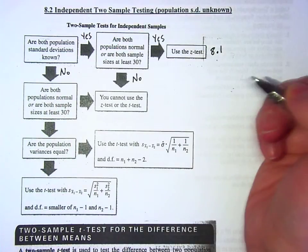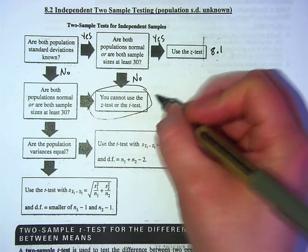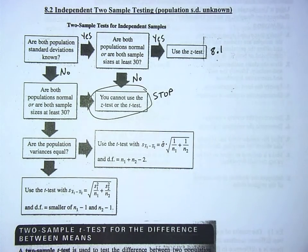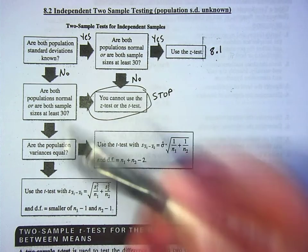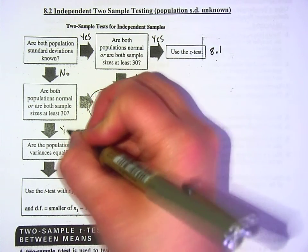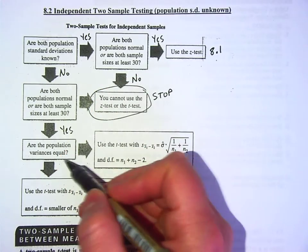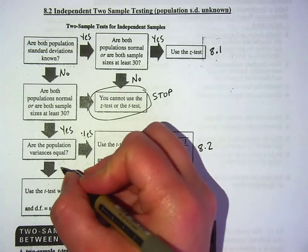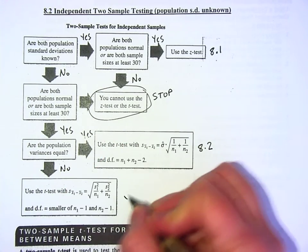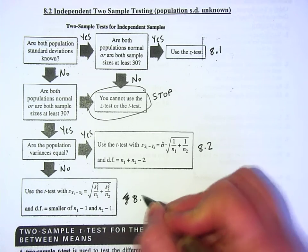If the answers are no, you just stop the test completely if you don't have both populations normal or both sample sizes are at least 30. If the answer is no and you don't know the population standard deviation, the question then becomes, are the population variances equal? If the answer is yes, then you're going to do this t-test. And if the answer is no, then you're going to do this t-test. So these are both 8.2.